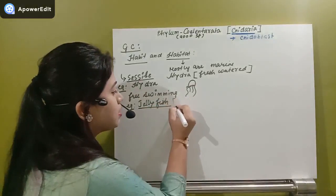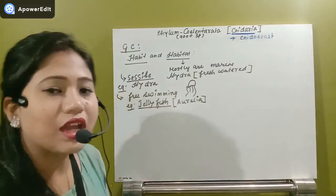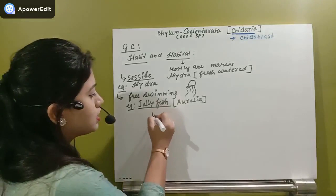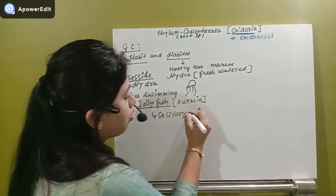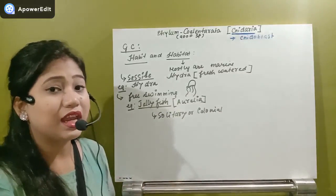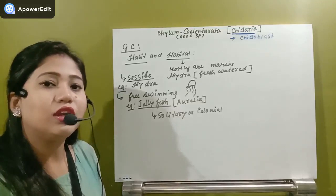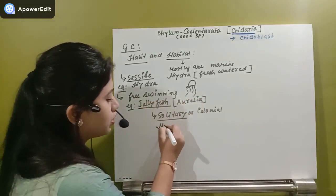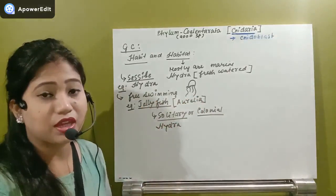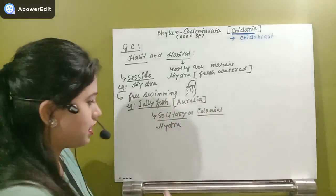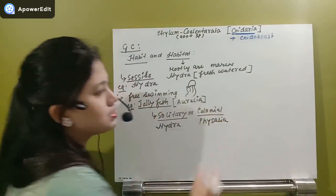The scientific name of jellyfish is Aurelia. Now, another condition in habit: organisms can be either solitary or colonial. Solitary organisms live individually, like jellyfish and hydra. Colonial organisms live in groups, floating together. An example of a colonial species is Physalia.